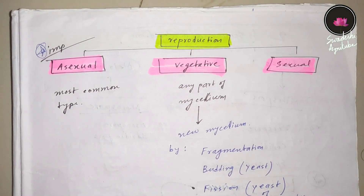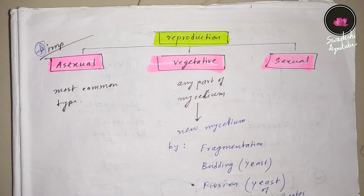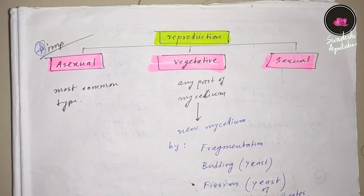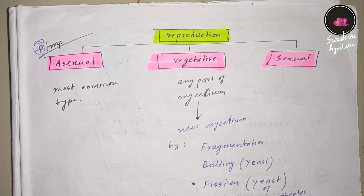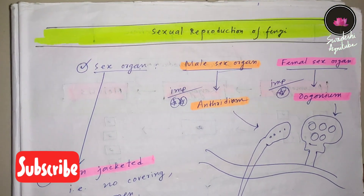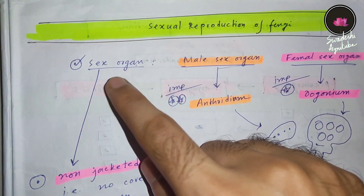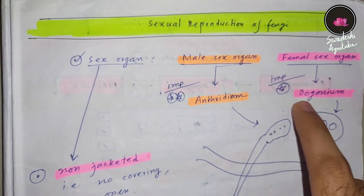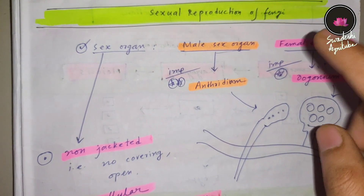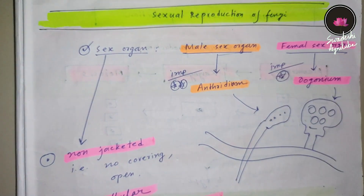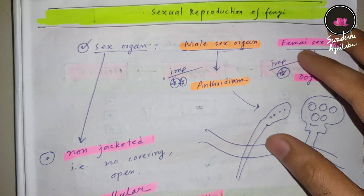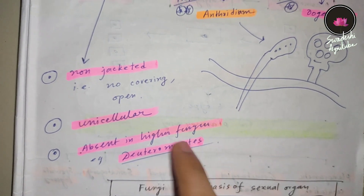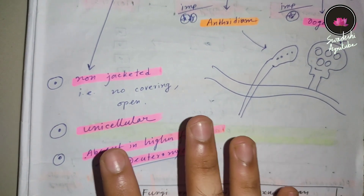As you go from lower fungi to higher fungi, you will see a reduction in sexual reproduction activity. In higher fungi there is a lack of sex organs. The male sex organ is called the antheridium and the female sex organ is called the oogonium. Both sex organs are unicellular and non-jacketed, meaning there is no cover over them. They are absent in higher fungi such as basidiomycetes, which lack sex organs.